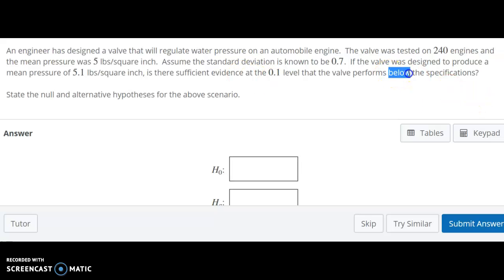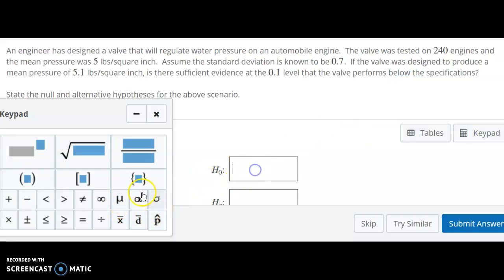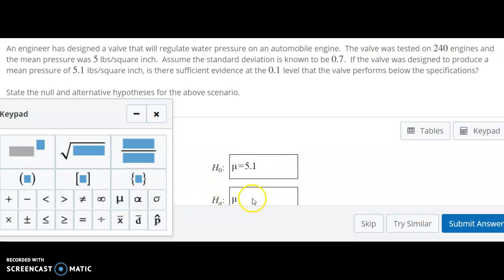And here, notice this is the wording that they'd be looking for for the less than. So instead of the way they worded the last question where they said it could be below or it could be above, this one's strictly below. So again, we have 240 engines, mean pressure, 5 pounds per square inch. So right away we know that we have a mean, always an equal sign in the null hypothesis. The question is the 5 or 5.1, and we're looking at the specifications. So this is that 5.1, and this is going to have to be mean something 5.1.